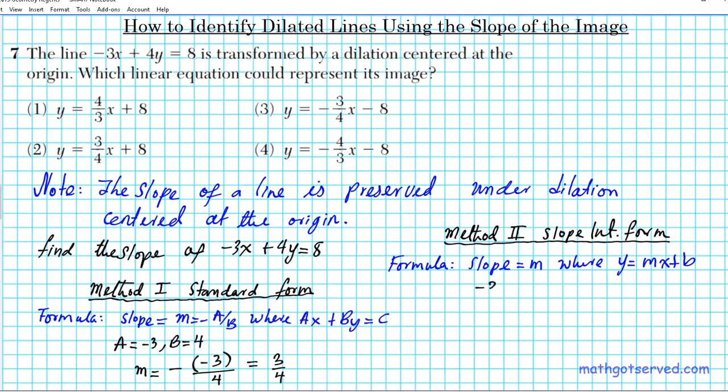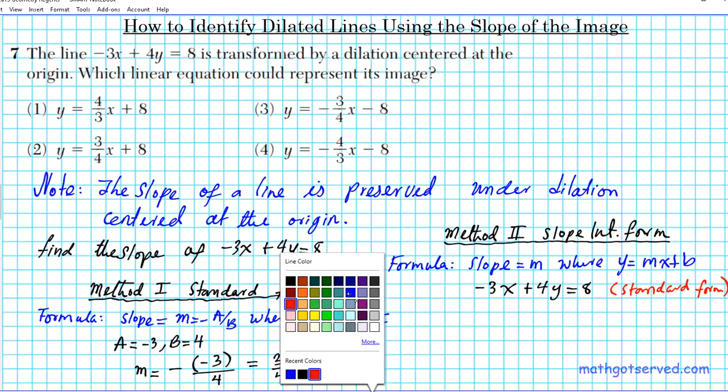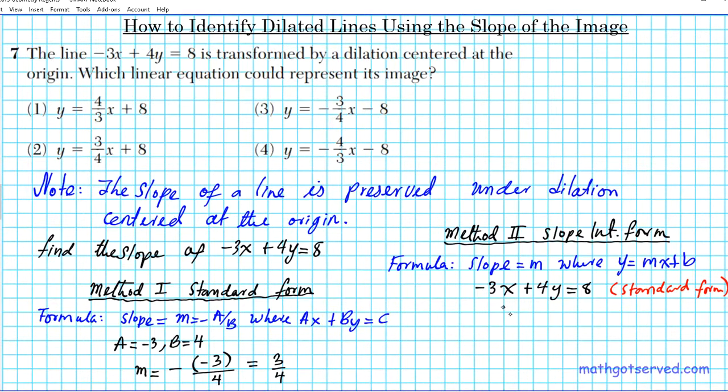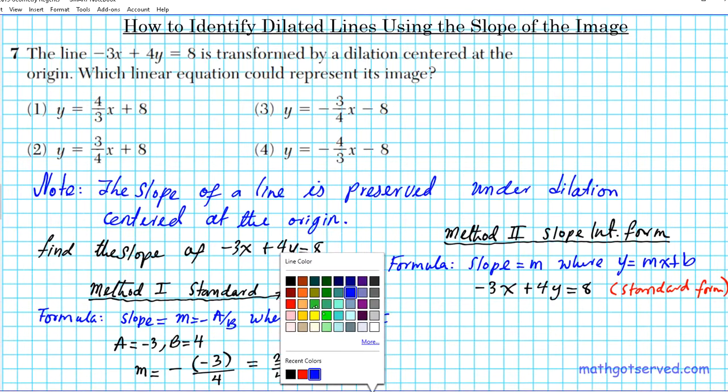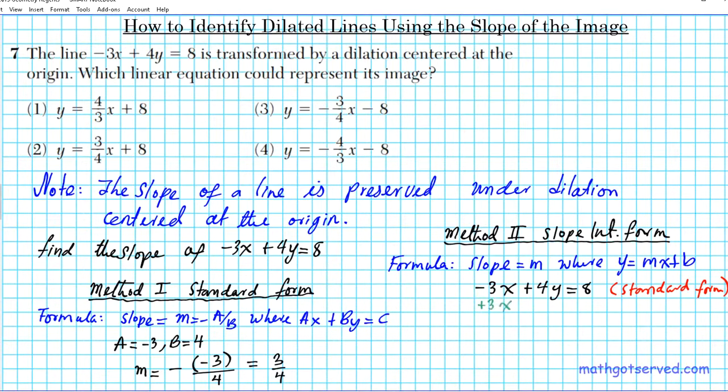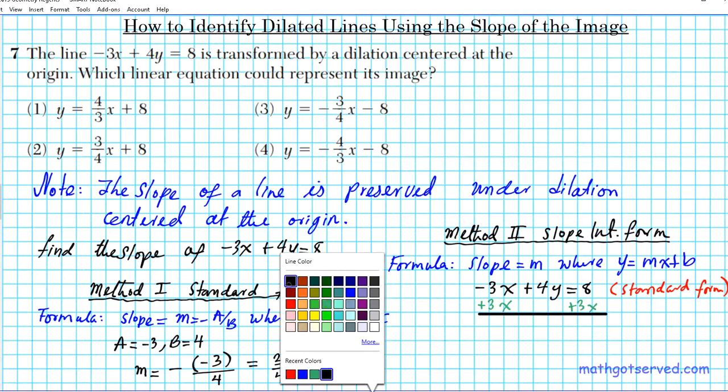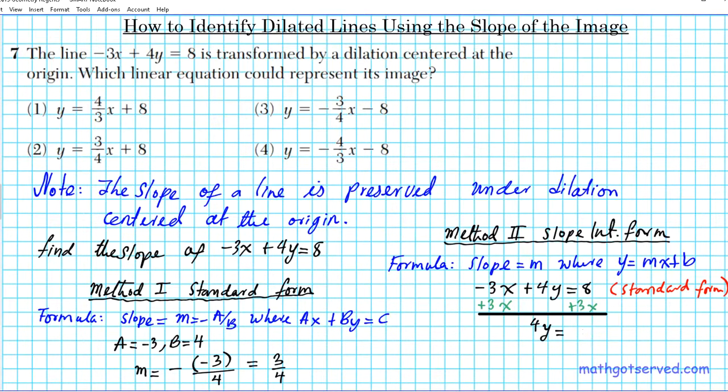In this particular problem, we are given the standard form, so we have to do some work to transform it into the slope intercept form. We want to get y by itself. We can accomplish this in two steps: add 3x to both sides and divide by 4.